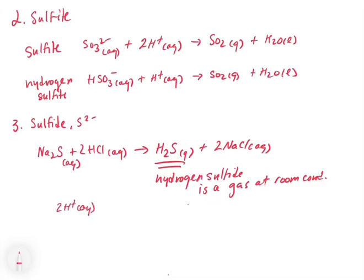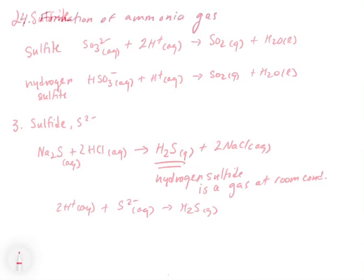So let's just quickly write the net ionic for the sulfide gas reaction. So in this case, if you were to write the net ionic, the two ions that are built into the hydrogen sulfide are 2H+ aqueous plus S2- aqueous gives H2S gas. So that's the net ionic for that reaction.